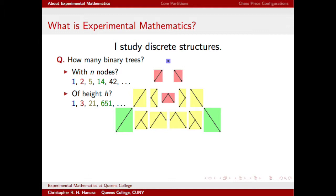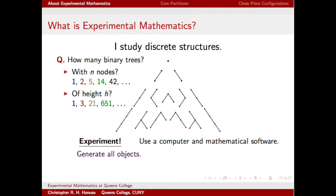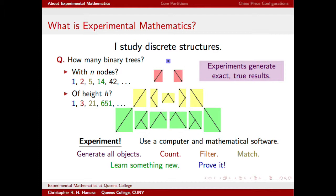The experiments come in if I want to prove theorems or create conjectures about these objects. I use a computer and some mathematical software to generate all objects and condition on their properties. Then I can program the computer to count the objects, or filter the objects, or match the objects, or generate large examples to learn something new, and eventually develop intuition in order to prove a theorem. Unlike other sciences, my experiments generate exact, true results. So I know my answer is perfectly correct, but then I have to prove some theorem that explains the properties that I see.